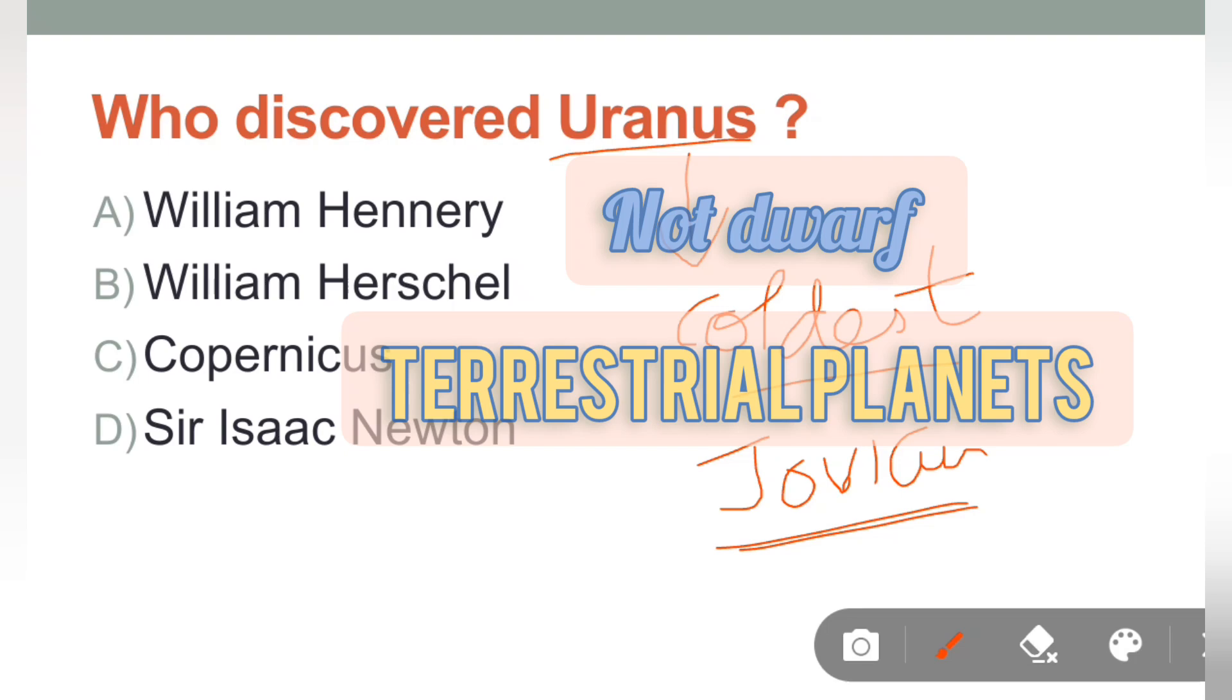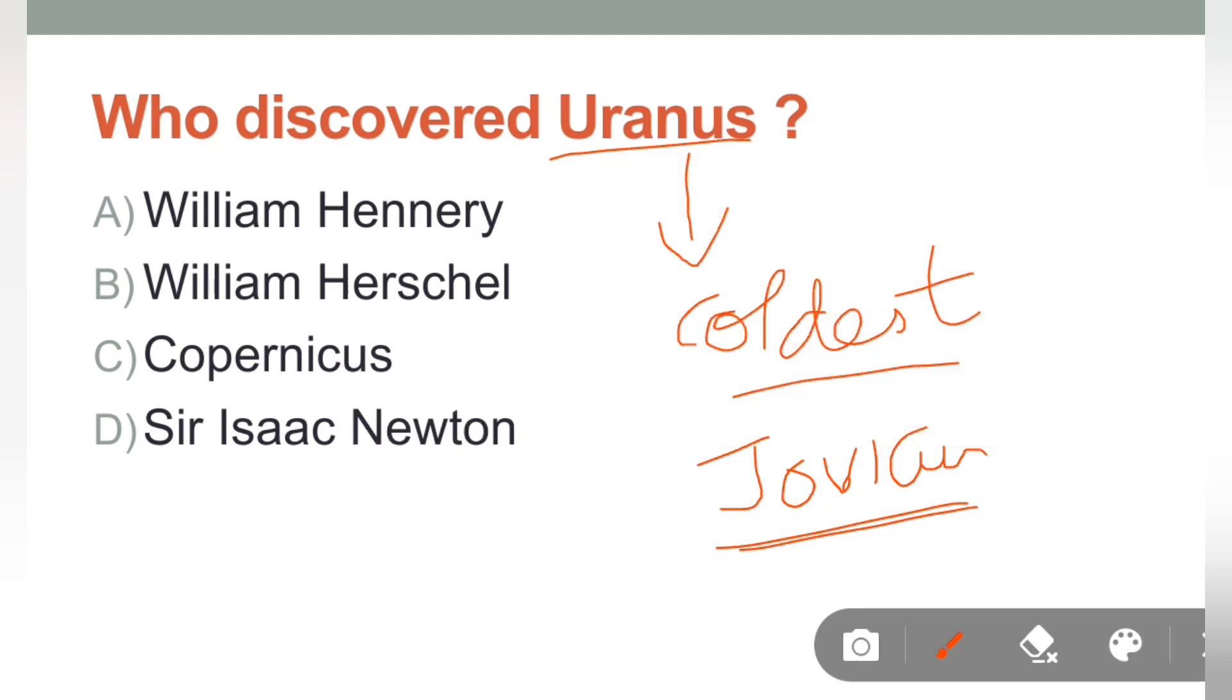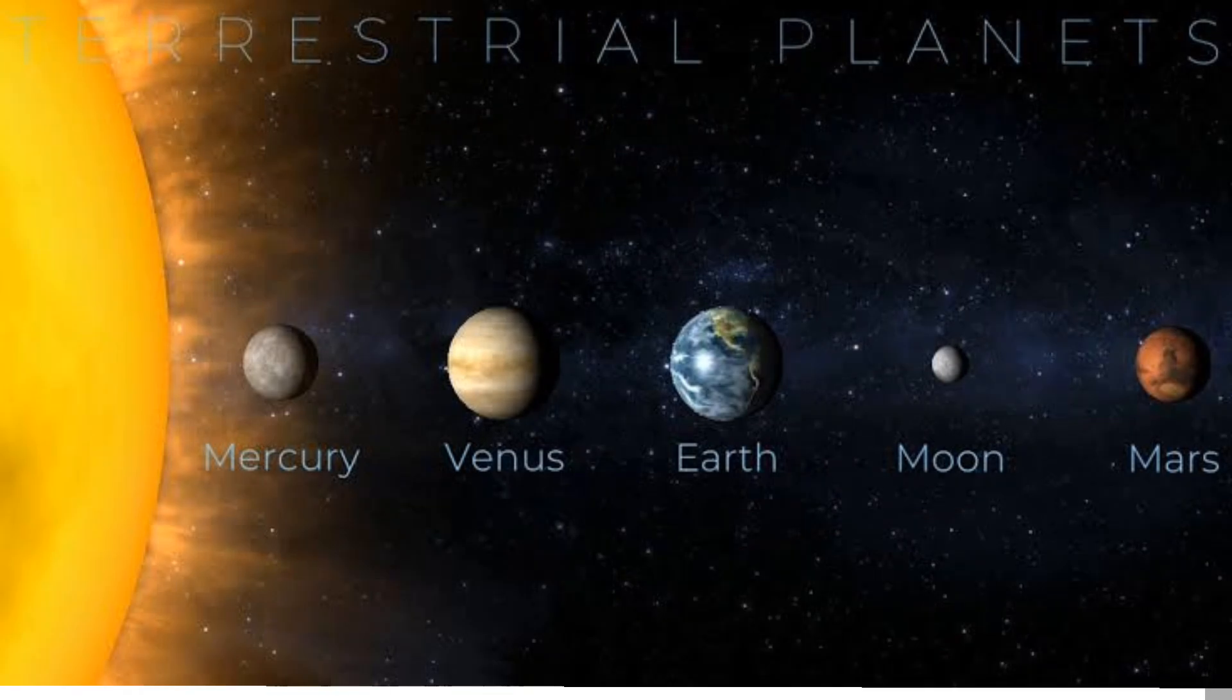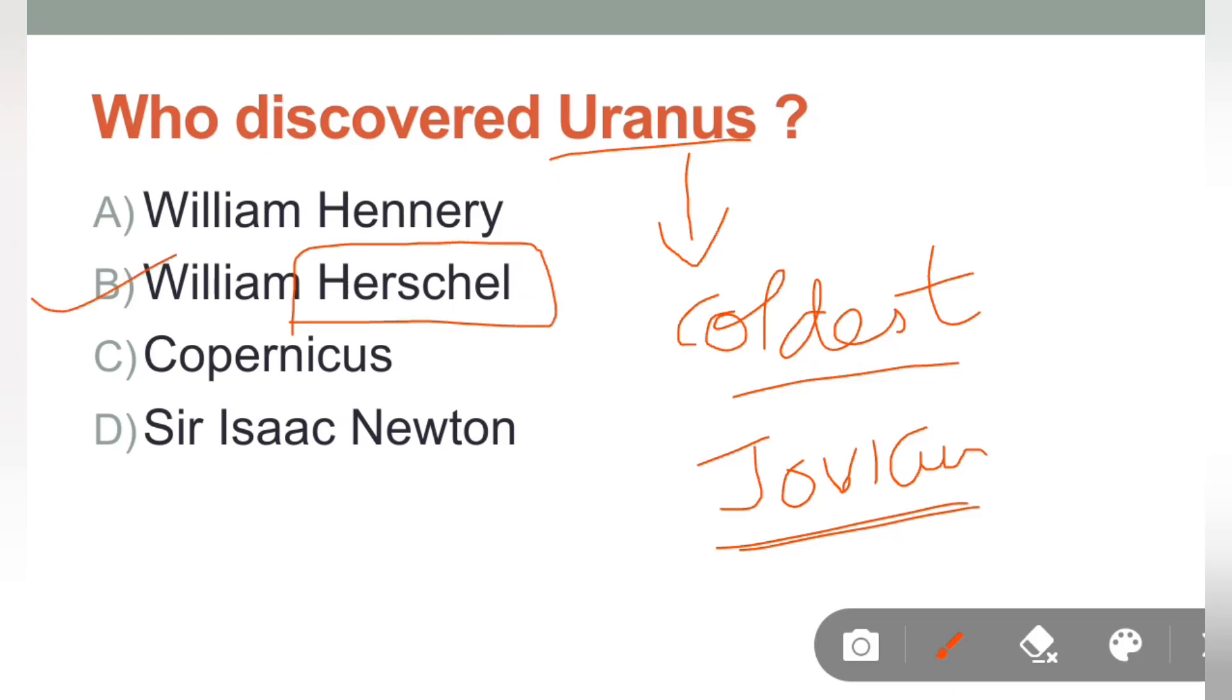Whereas dwarf planets like Mercury, Venus, Mars and Earth, their nature is solid and they are small in size. Now, the correct answer is William Herschel. Aap Herschel naam se yaad rakh sakte ho, Uranus ki discovery ki thi Herschel jail ne.